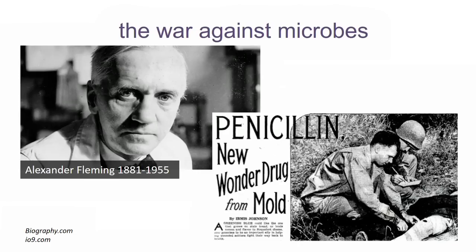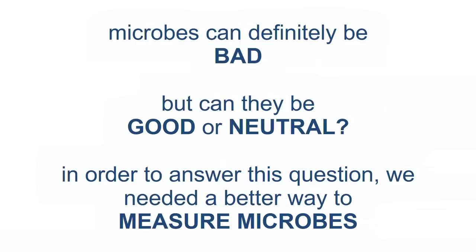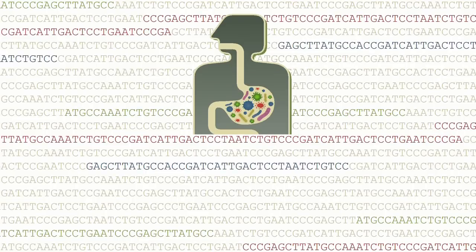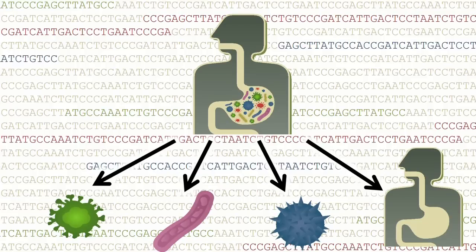So this was our war against microbes — microbes can definitely be bad. But putting this in perspective, back in Leeuwenhoek's day in the 1600s, he thought maybe they could be good or neutral; he just said they're there. To answer whether they're good, bad, neutral, or context-dependent, we needed better ways to measure microbes. In comes the era of sequencing: we can now take human tissues, body fluids, stool, spit, skin — you name it — sequence it, and by aligning sequences to reference genomes of different organisms, figure out who's there in much greater detail.